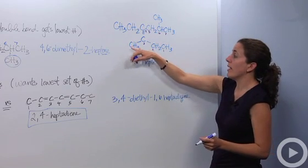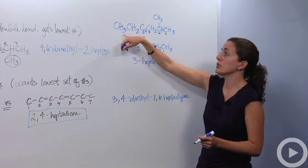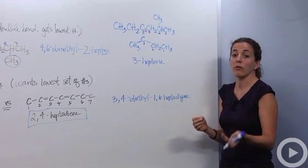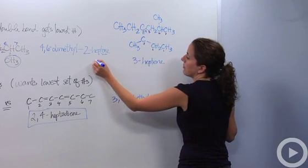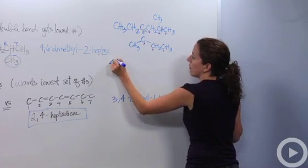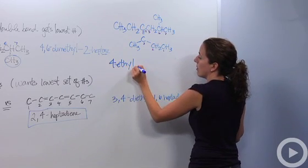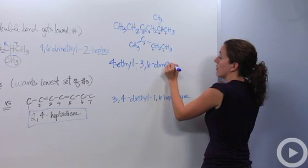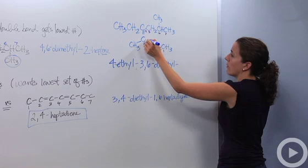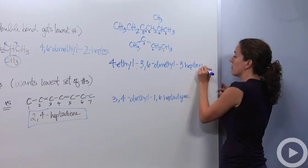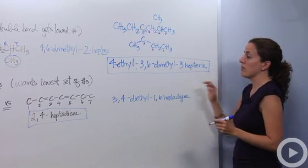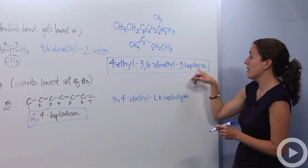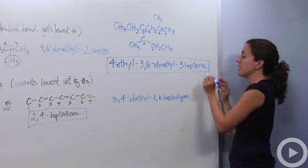Then we look at our branches. We have a methyl group here, a methyl group here, and an ethyl group — two carbons. We name the ethyl group first because 'E' comes before 'M' alphabetically. The ethyl group is at carbon four, giving us 4-ethyl. The two methyl groups are at carbons three and six, giving 3,6-dimethyl. Combined with 3-heptene, the full name is 4-ethyl-3,6-dimethyl-3-heptene.